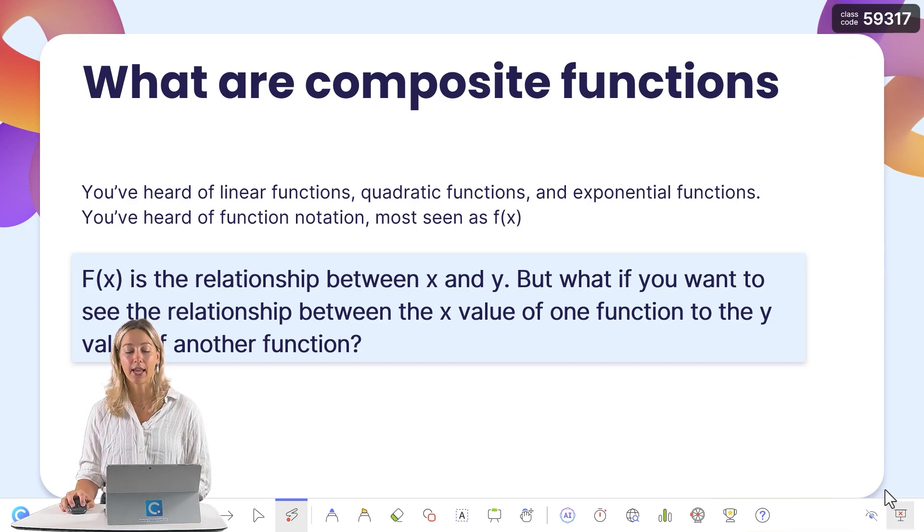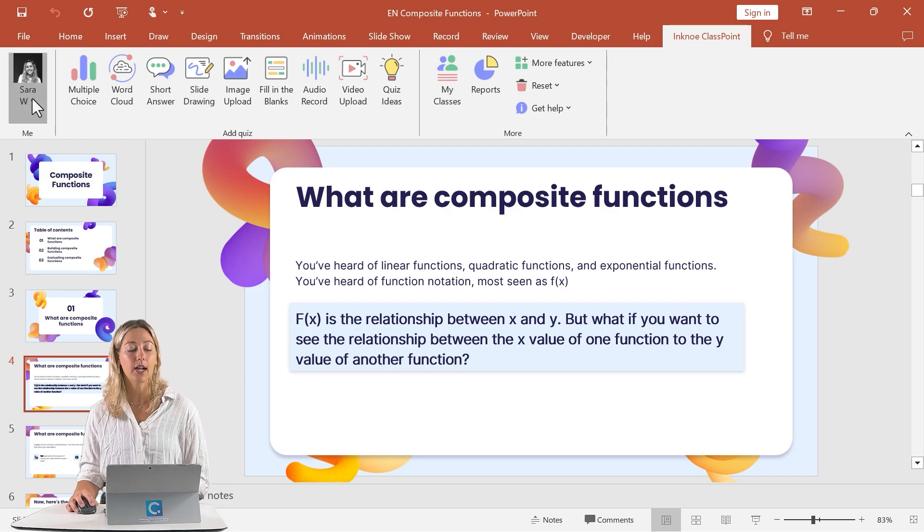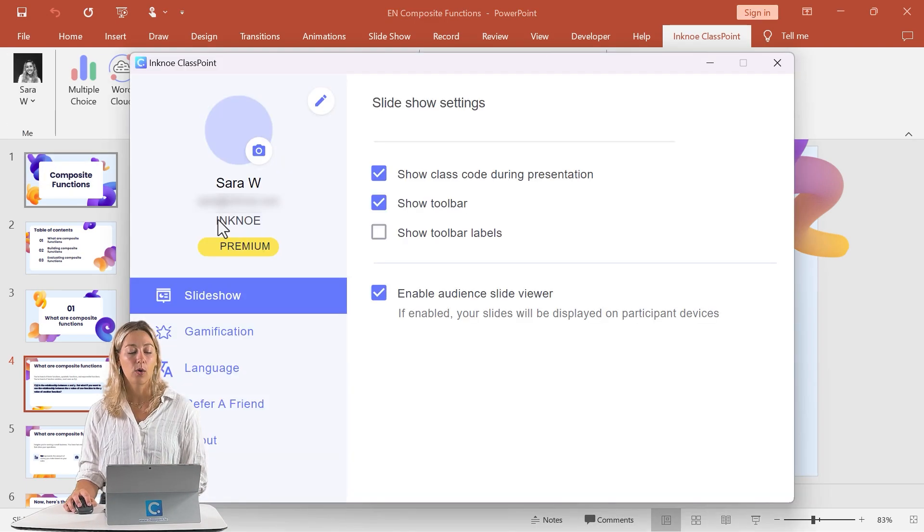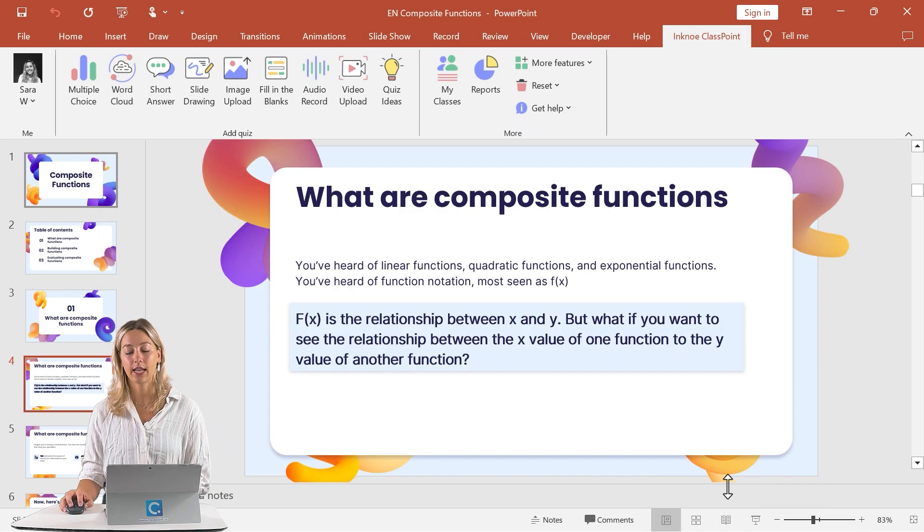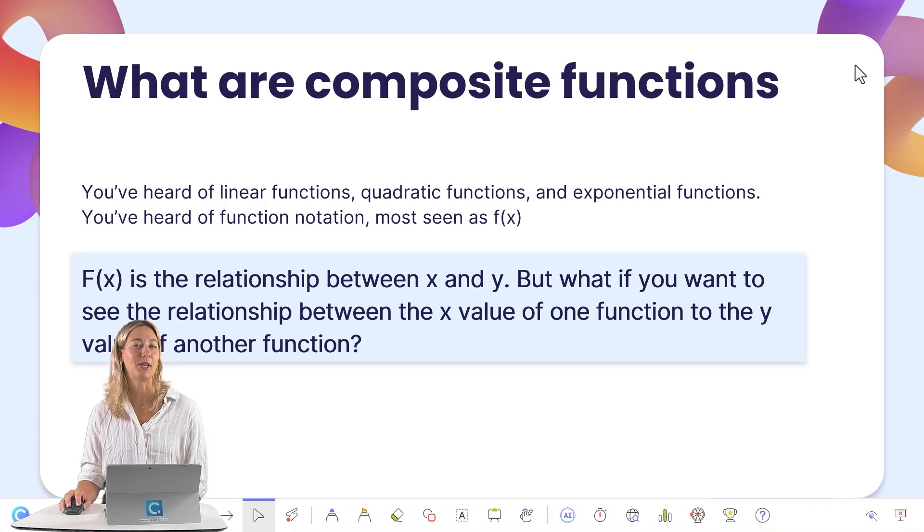To do that, we'll go back into our edit mode. Click on your user profile and in settings, we can go to the slideshow tab here and just uncheck the show class code. Then next time when you go into your presentation, that class code will be gone.